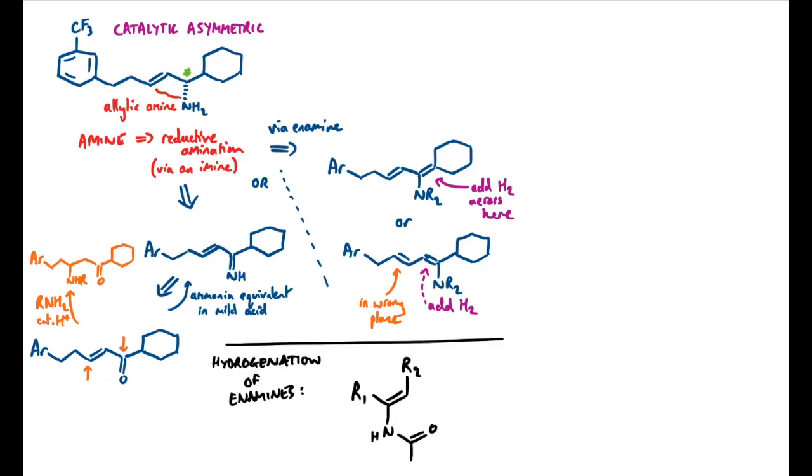The retrosynthesis plan, for example, would be to add hydrogen across the CC double bond there to set the stereocenter. But we'll note that if we do that in the second enamine, we end up with a problem - the other alkene will be in the wrong place.